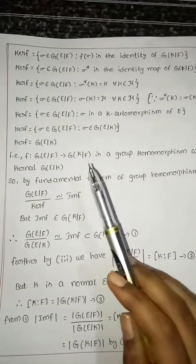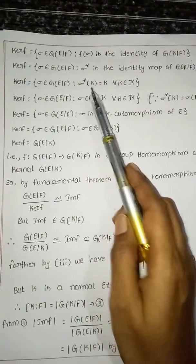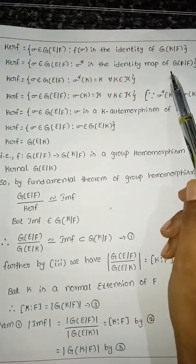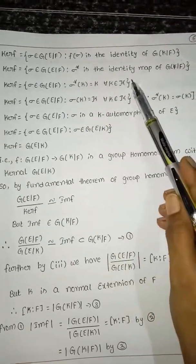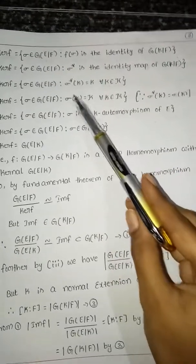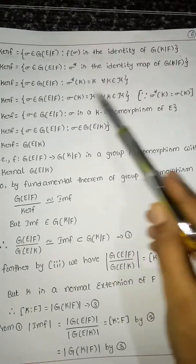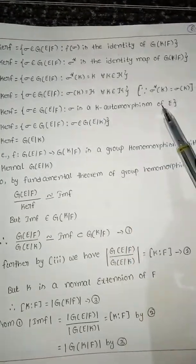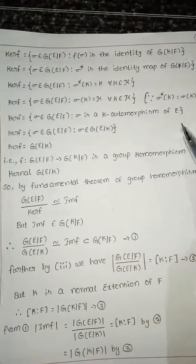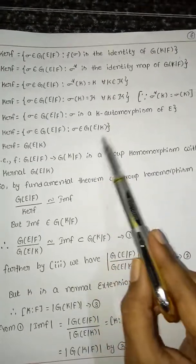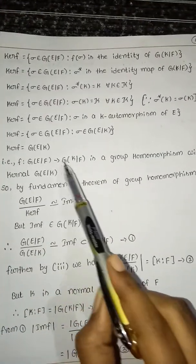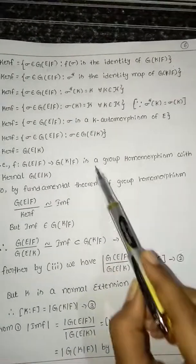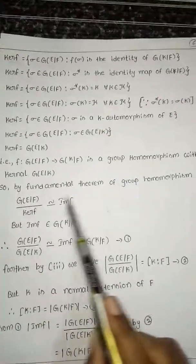Next we find the kernel of φ. Kernel of φ equals {σ in G(E/F) : φ(σ) is the identity of G(K/F)}. φ(σ) = σ* is the identity map means σ*(k) = k for all k in K. Since σ*(k) = σ(k), σ is a K-automorphism of E, which means σ belongs to G(E/K). Therefore kernel of φ equals G(E/K). That is, φ: G(E/F) → G(K/F) is a group homomorphism with kernel G(E/K). So by the fundamental theorem of group homomorphisms...